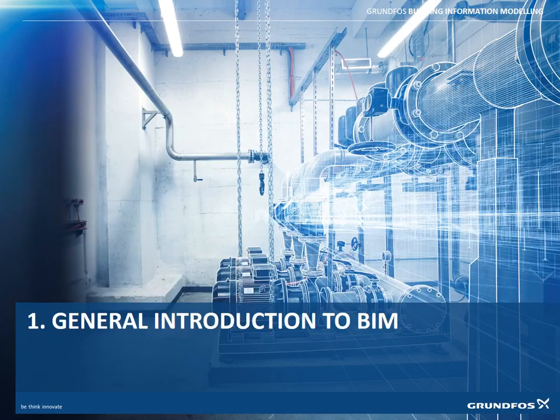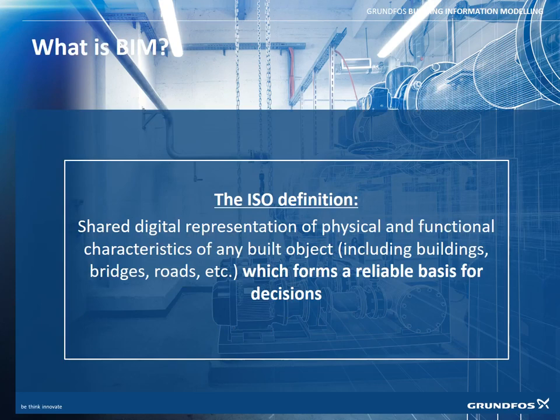Starting with a general introduction to building information modeling — what is BIM? Looking at the ISO definition, it states that it's a shared digital representation of physical and functional characteristics of any built object, including buildings, bridges, roads, and so on, which forms a reliable basis for decisions. So already we begin to see that it's not just about buildings. BIM is really taking off in a lot of other disciplines — infrastructure, entire cities, water utility networks — but it did originate primarily within buildings.